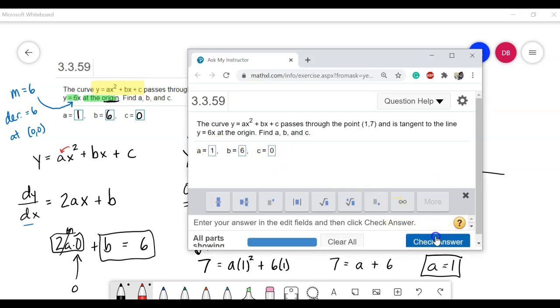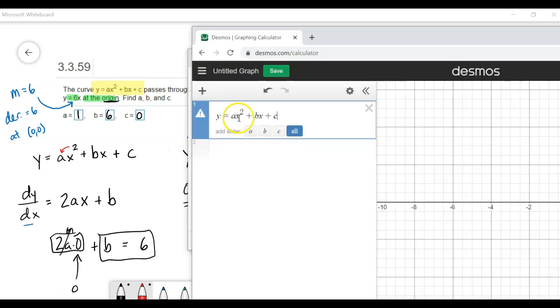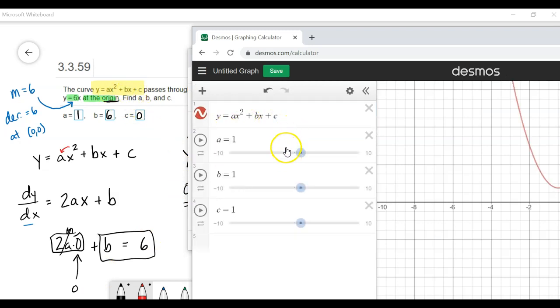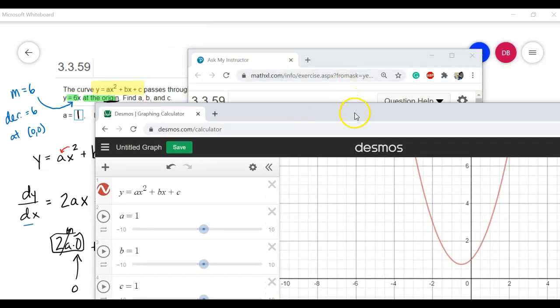So I'll type those all in to check. And there I get the correct values. Now, I want to show you graphically what just happened. So notice I type in y equals ax squared plus bx plus c, what they tell us to originally write. I'm going to tell it to add a slider for all of these values.